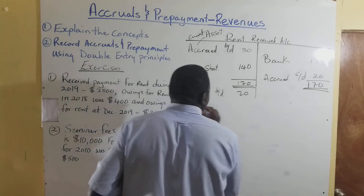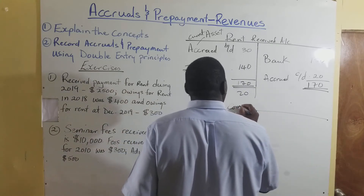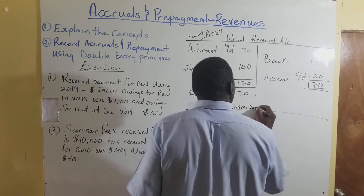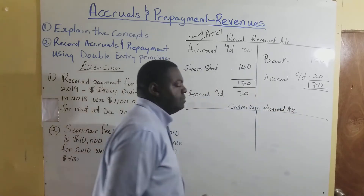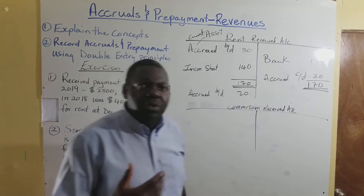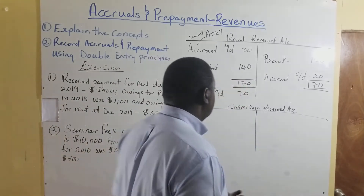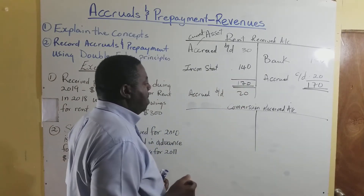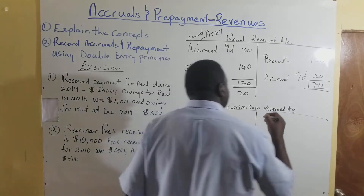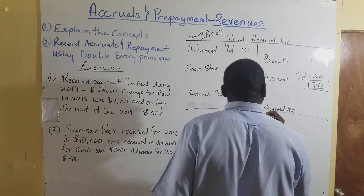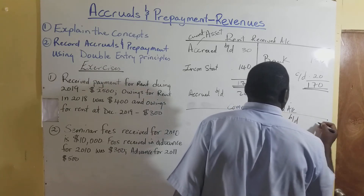Let's do the prepayment now. Say we have a commission received account — this is where we are doing work for people and they are paying us a commission, so it's a revenue to us. The opening prepayment is going to be on the credit side — prepaid BD on the credit side. Let's call that $200.